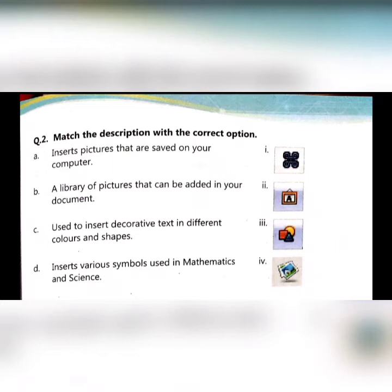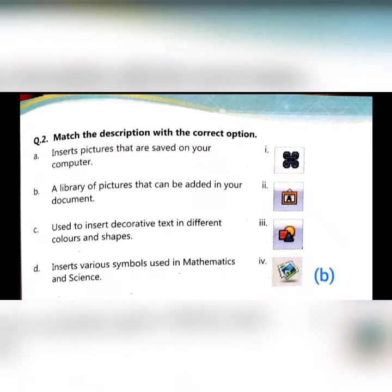Question number two from page 35: match the description with the correct option. A — Insert pictures that are saved on your computer: we will choose the From File icon. B — A library of pictures that can be added in your document: the Gallery icon. C — Used to insert decorative text in different colors and shapes: the Fontwork Gallery icon. D — Inserts various symbols used in mathematics and science: we will choose Special Character option.